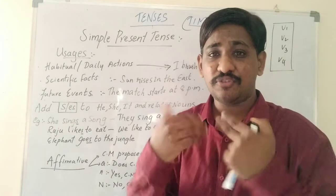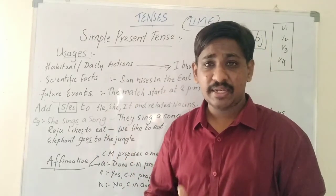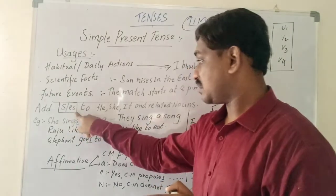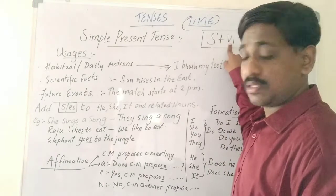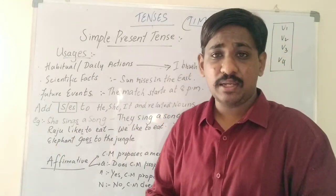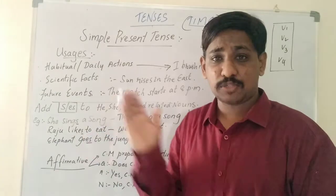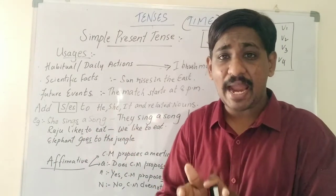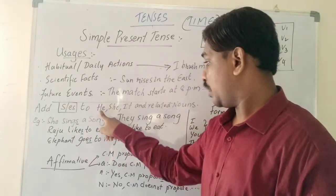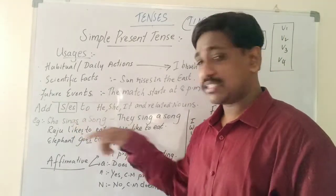Let us see in detail the formation: the way of making questions, affirmative or positive sentences, and negative sentences. The rule you have to always remember is you have to add -s or -es to the verb when the subject is he, she, it, or related equivalent nouns. Instead of he you might use Ram, instead of she you might use Lakshmi, instead of it you might use elephant. For example: she sings a song — we add -s to 'sing' because the subject is she.